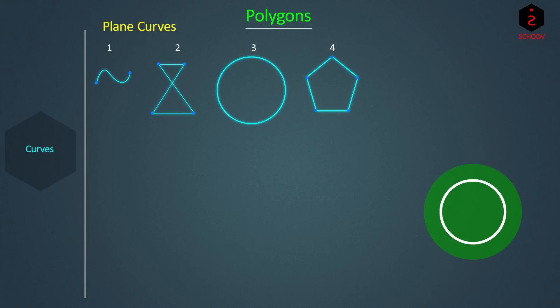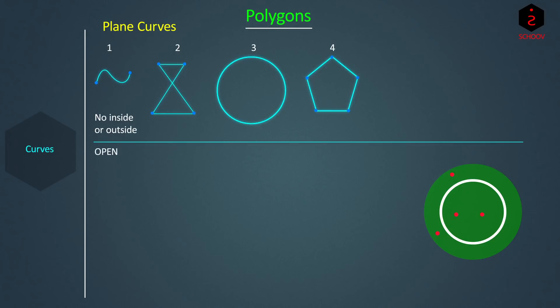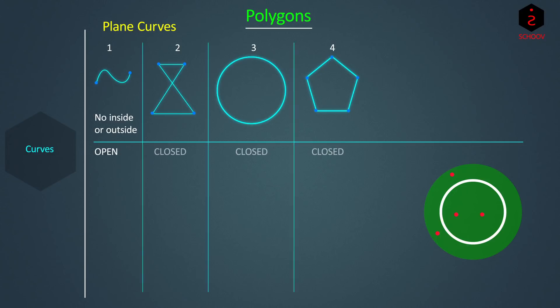Just as on a cricket ground we say players are inside or outside the boundary, similarly we can say for curve one what is inside and what is outside. For curves two, three, or four, it is clear that we cannot find inside or outside for curve one because there is no closed boundary — it has different beginning and end points. Such curves are called open curves. On the other hand, curves two, three, and four have the same beginning and end points and they are closed curves. Only for closed curves can we find inside and outside.